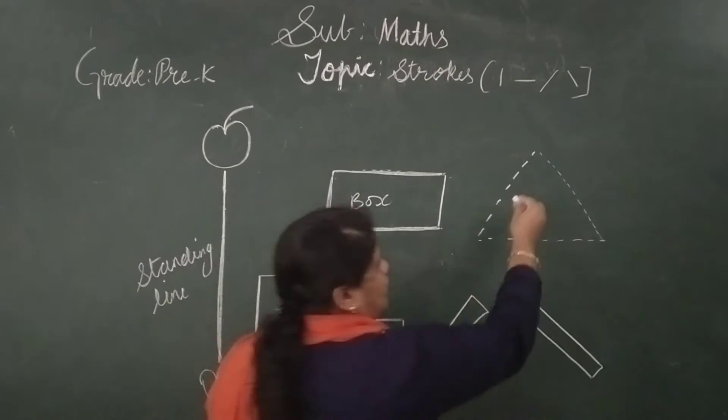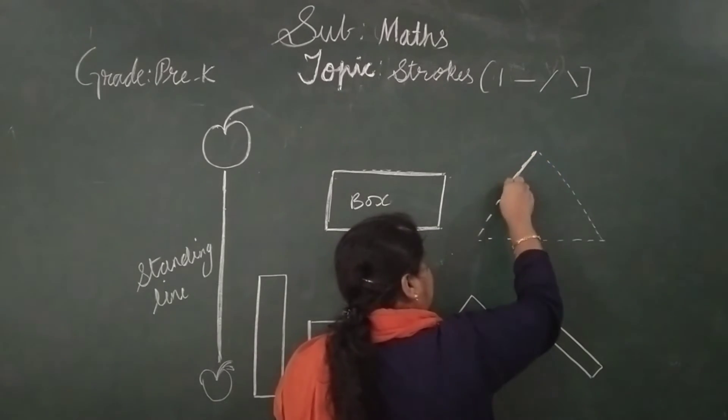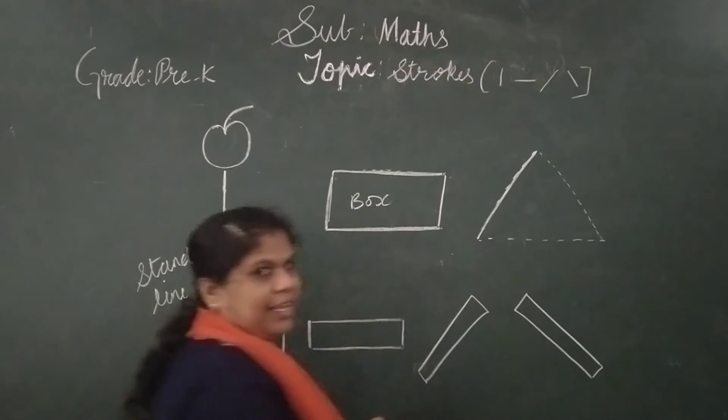Now, see here, this is a triangle. If you join, it becomes triangle. This is left slant line.